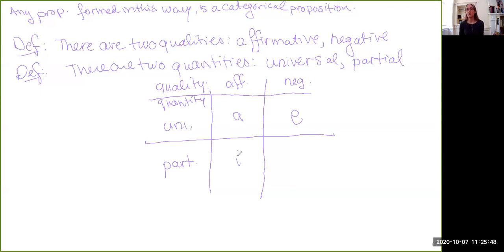Then we have the I claims are affirmative and partial because they're saying something positive. X belongs to some Y, but they're only saying it about part of the Ys, not all of them. And then we have the partial negative, and that is the O claims. So X does not belong to some Y.